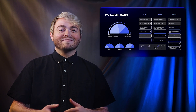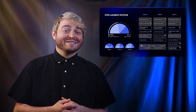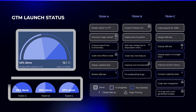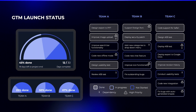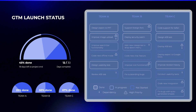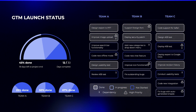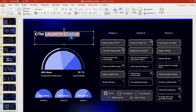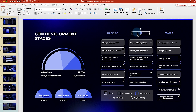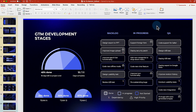This slide uses the product development team as an example. The dials on the left show overall completion and completion by team. The board on the right lists individual tasks under each team and their statuses. This can also be modified to be a Kanban board so that the columns will turn into development stages such as backlog, in progress, and QA.